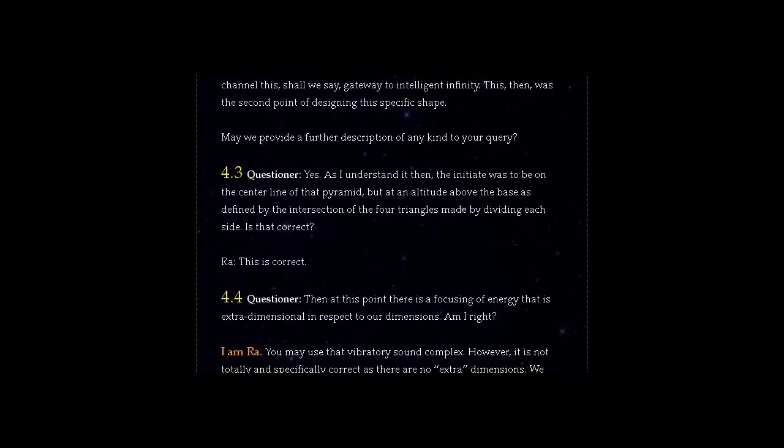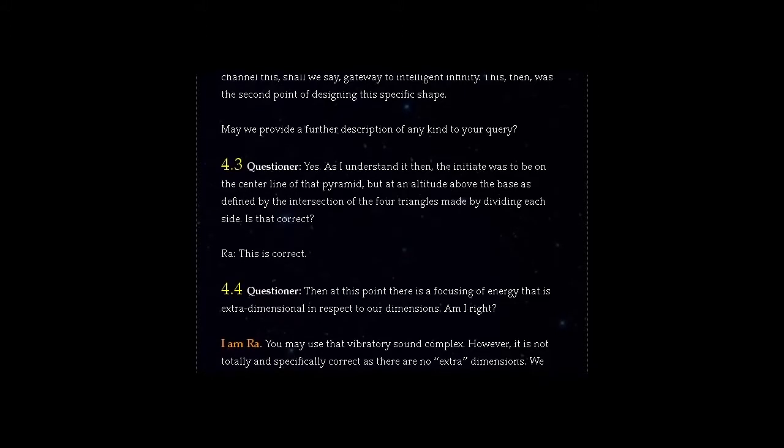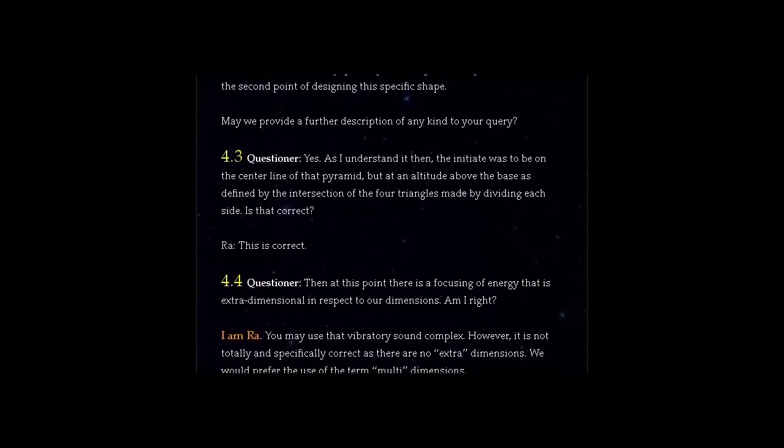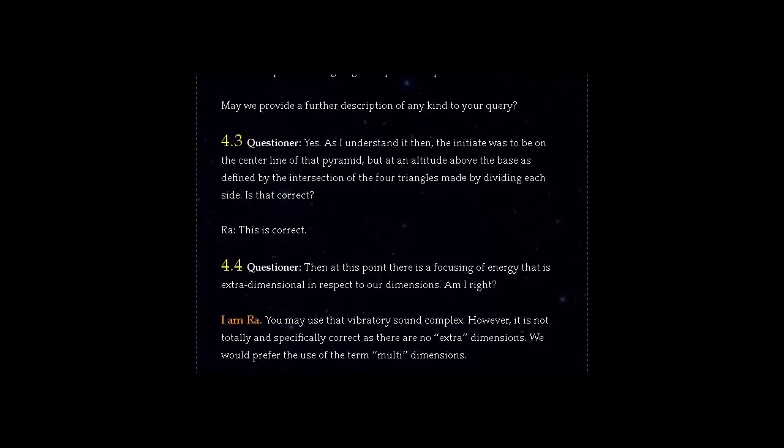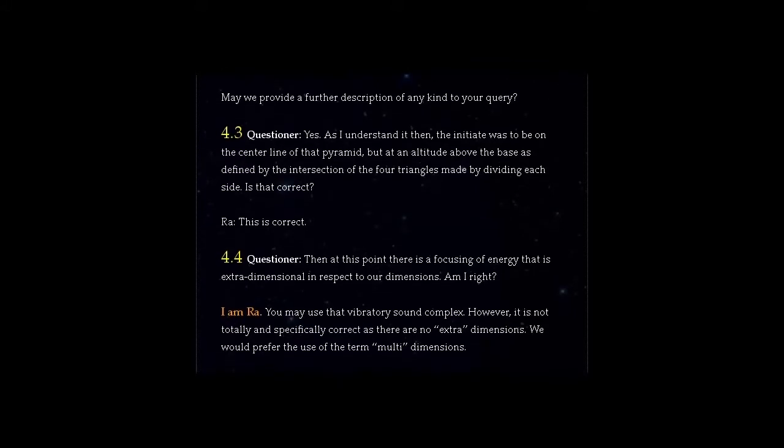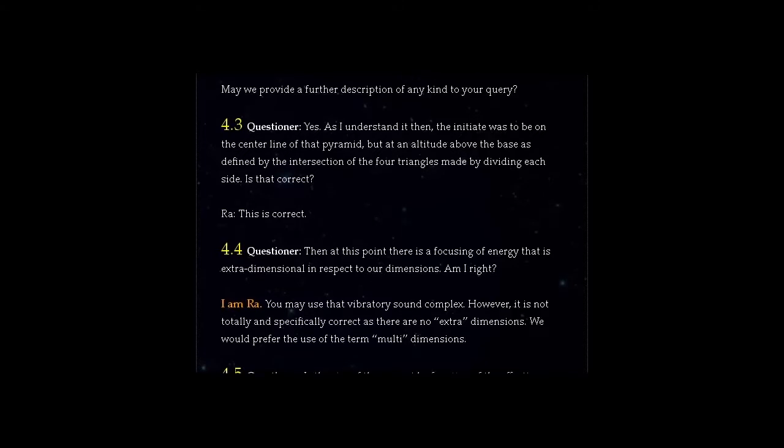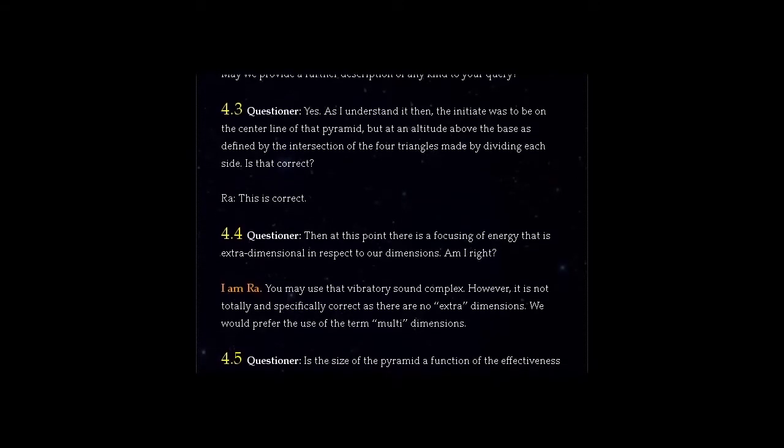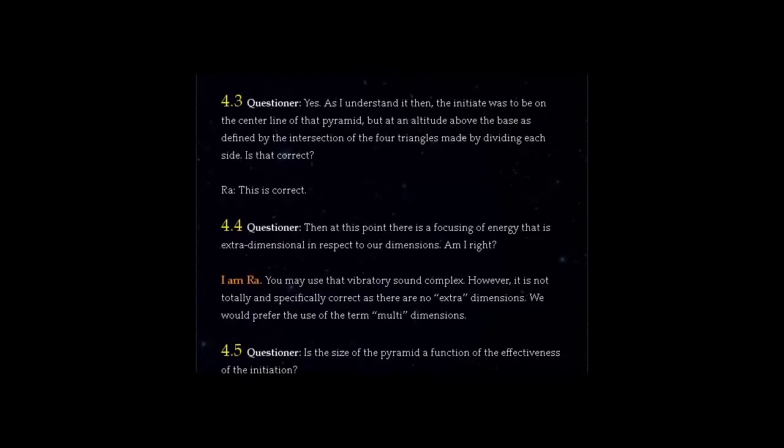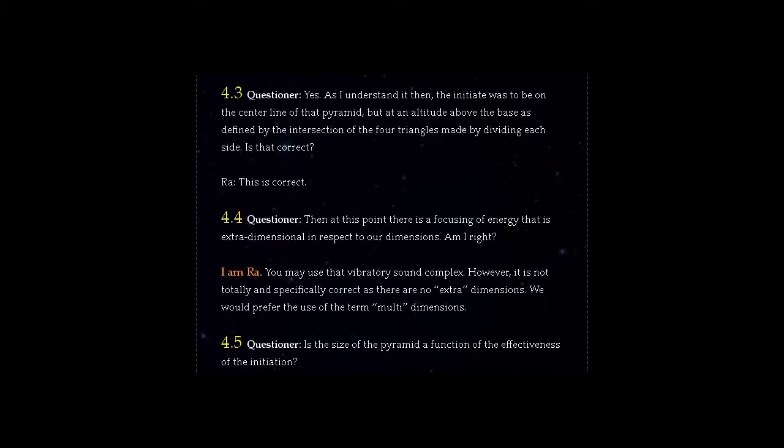May we provide a further description of any kind to your query? Question 4.3: Yes. As I understand it then, the initiate was to be on the center line of that pyramid, but at an altitude above the base as defined by the intersection of the four triangles made by dividing each side. Is that correct? Ra, this is correct.